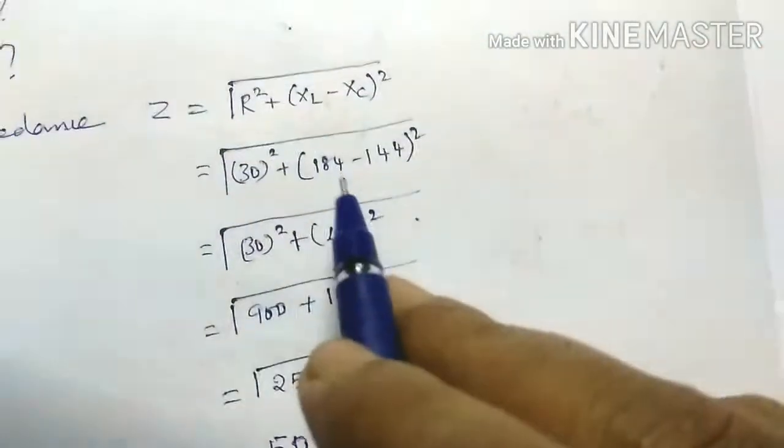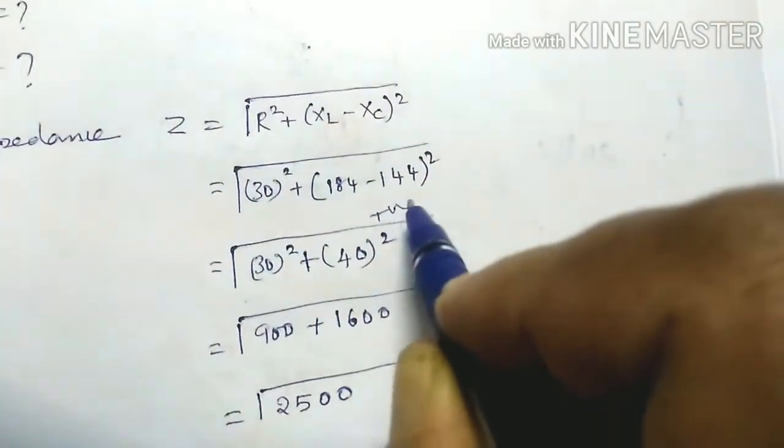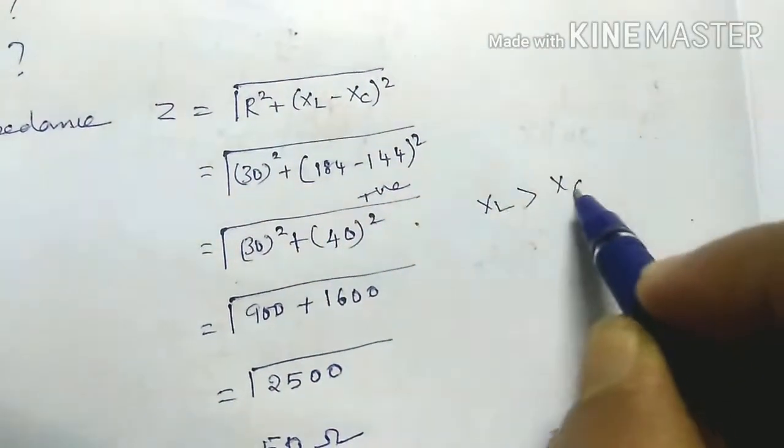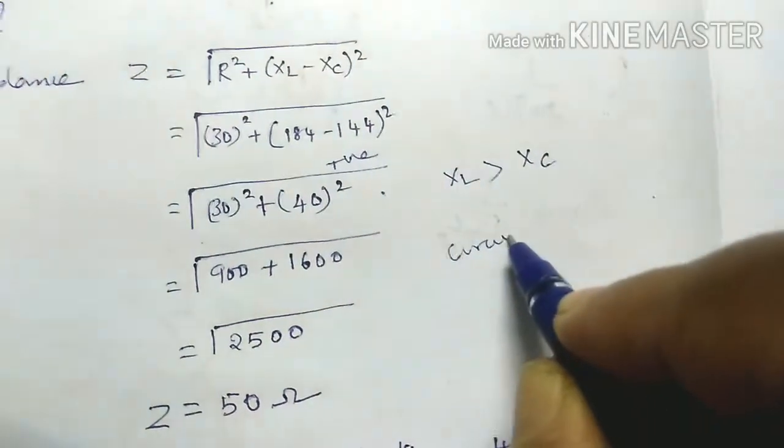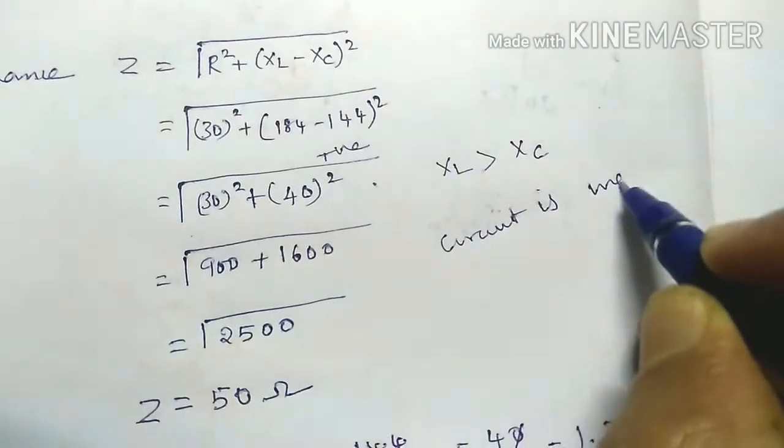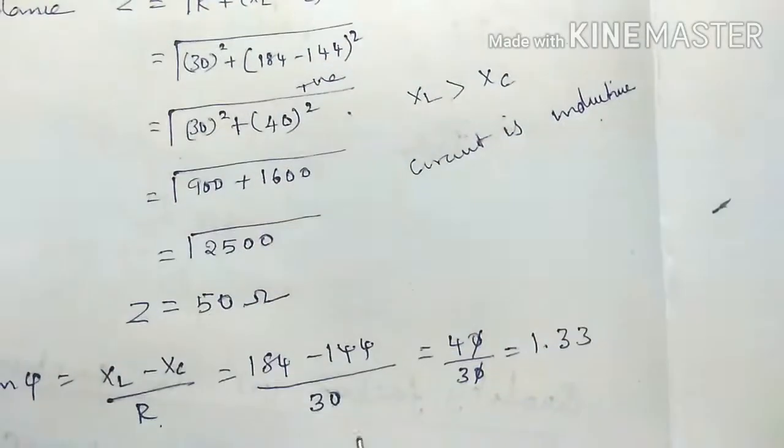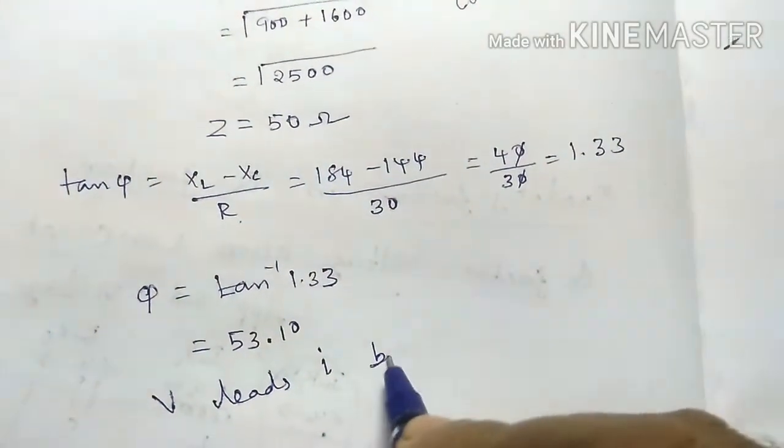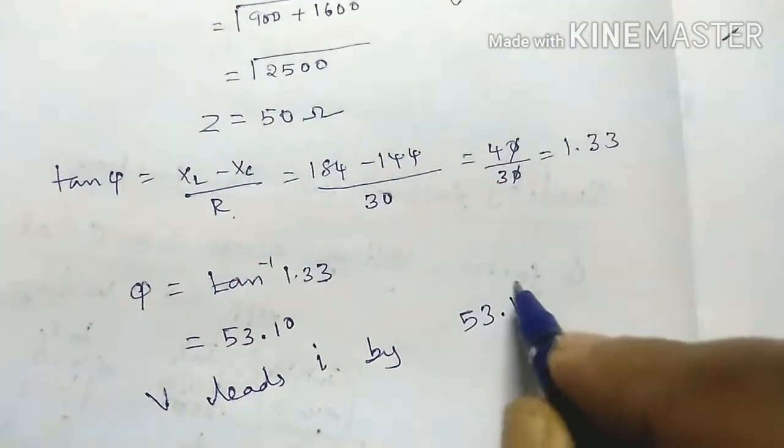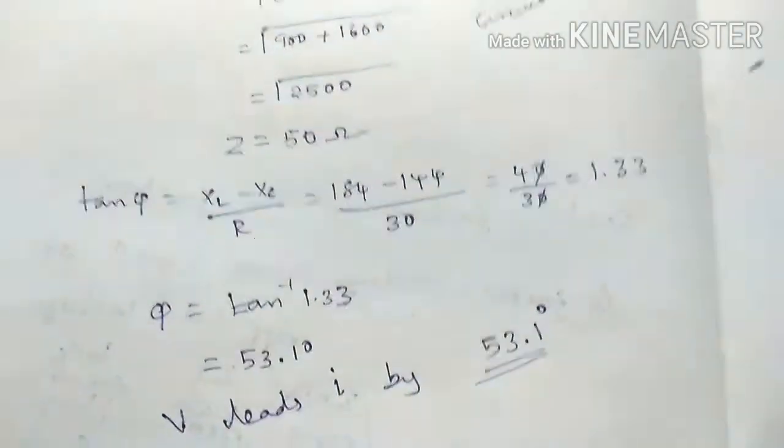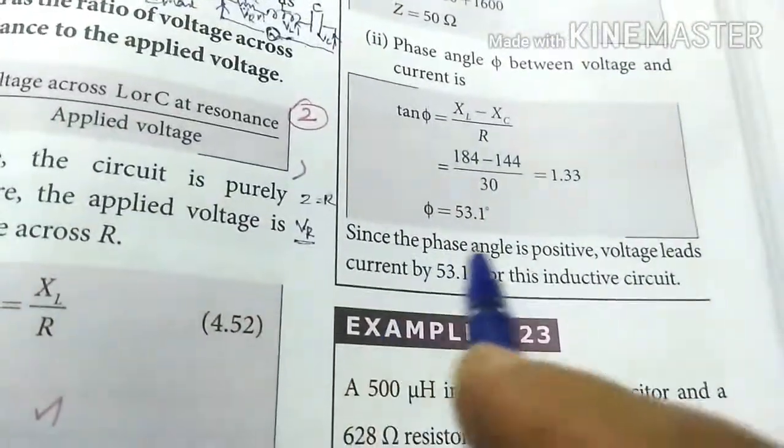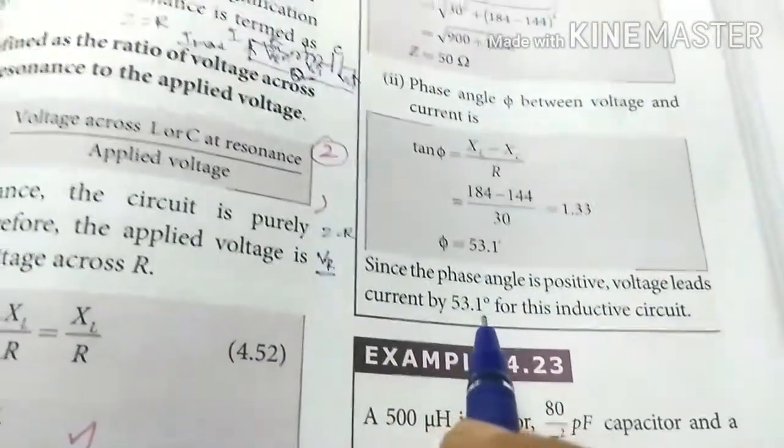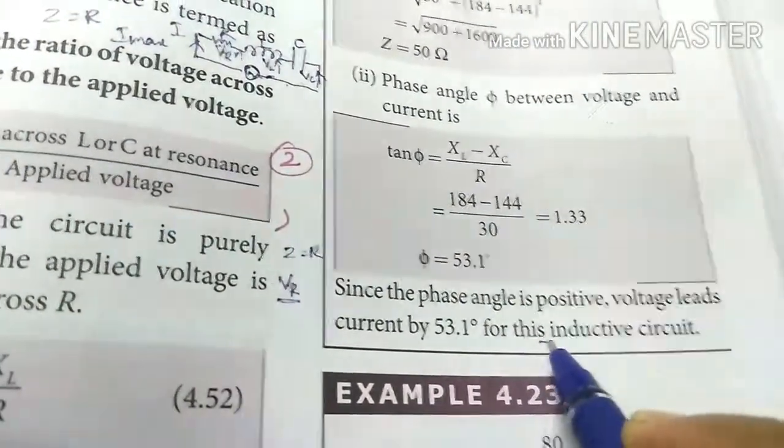So XL minus XC is positive value, then XL is greater than XC, then circuit is inductive circuit. Inductive circuit is, voltage leads current by phase angle 53.1 degree. Since the phase angle is positive, voltage leads current by 53.1 degree for this inductive circuit.